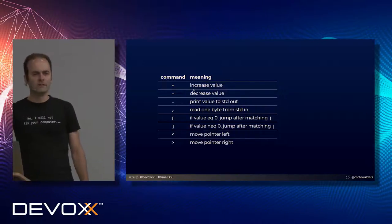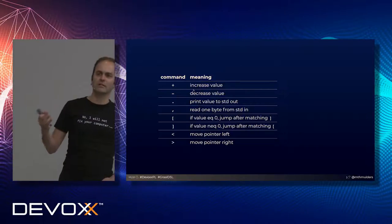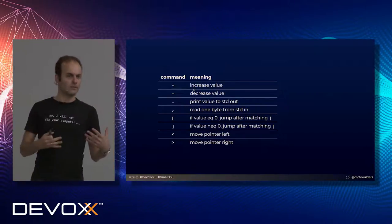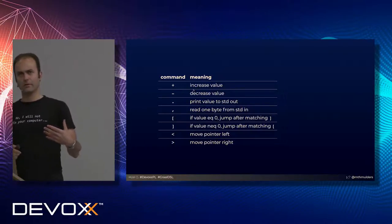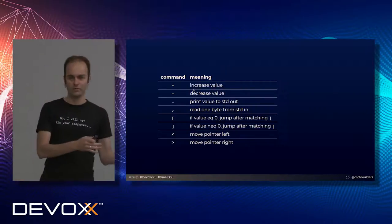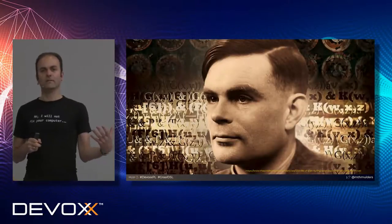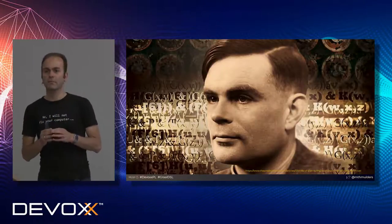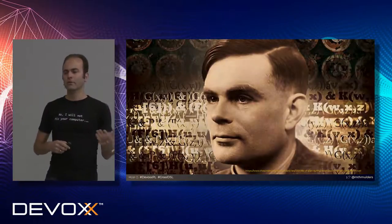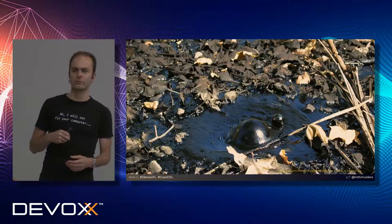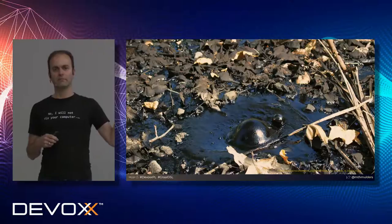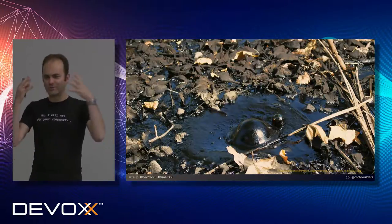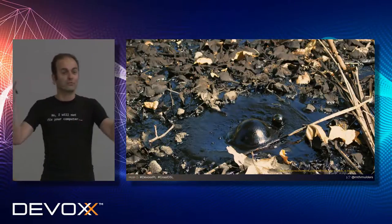There are also conditionals: if the current value equals exactly zero, we jump to the first command after the matching square bracket. And the other way around, if the current value is not equal to zero, we jump back to the corresponding opening square bracket. Finally, there are two commands to move the pointer through the byte array left and right. That's all. The language is Turing complete — you can write any algorithm in it, which you can mathematically prove — but it's also a Turing tar pit: you can implement any algorithm, but it might not be a good idea to do so.